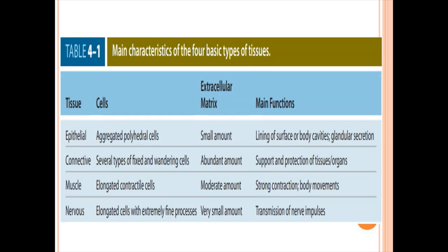This table shows the basic characteristics of the four basic tissue types. In epithelial tissue — the tissue we are focused on today — the cells are aggregated polyhedral cells and the extracellular matrix is present in a very small amount. Its function is to line body surfaces and body cavities, both internal and external, and it is involved in glandular secretion.